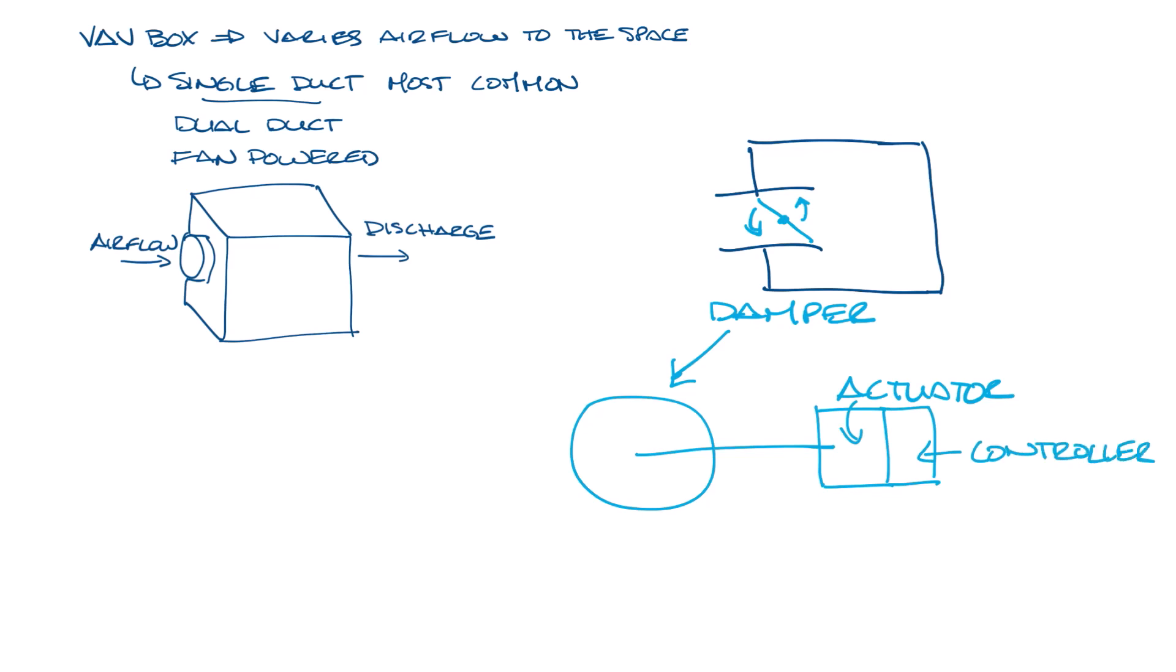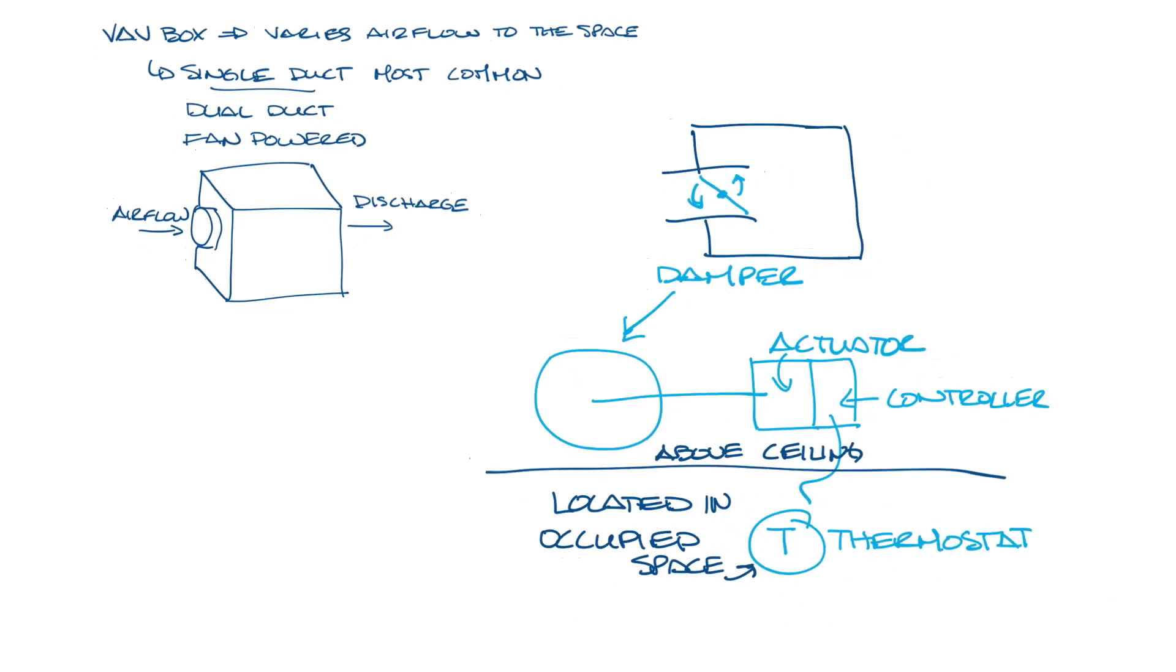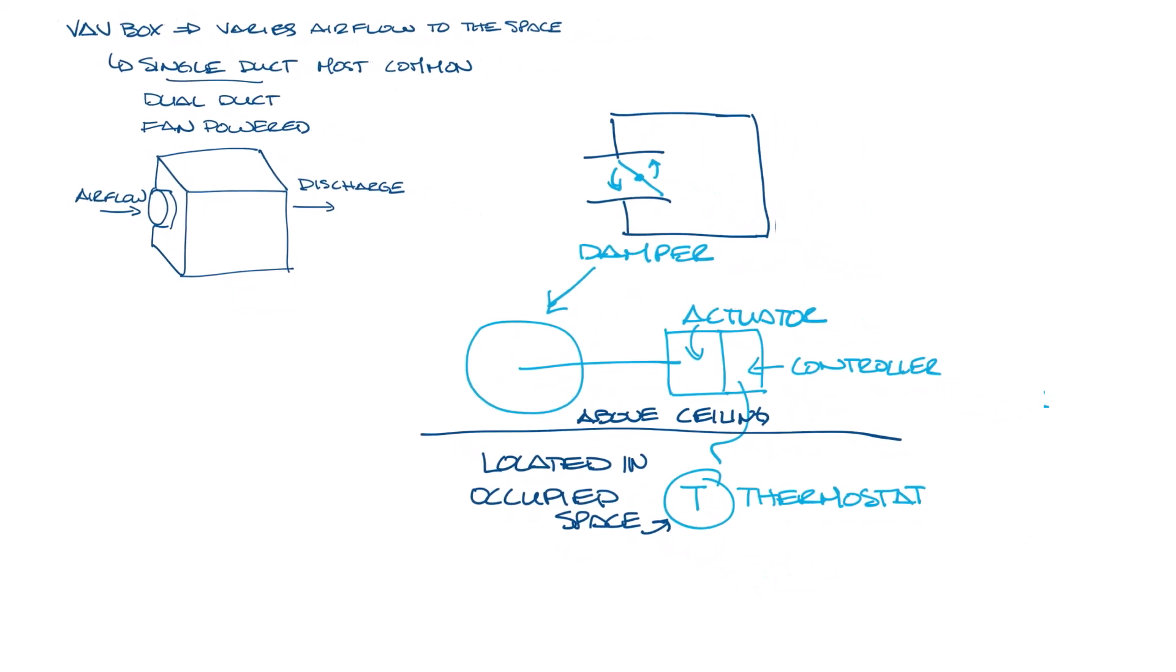Most controllers today are digital or DDC controls, although you'll see some analog and pneumatic still around. Connected to the controller is a thermostat that would be located on the wall in the space where the VAV box is supplying. VAV boxes will usually control a zone made up of several offices or spaces. So let's draw a line here. All of this is above the ceiling and the thermostat's in the space. All these components work together to maintain the temperature that the thermostat is set to.